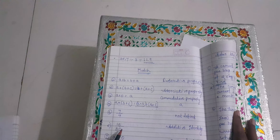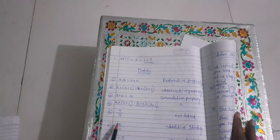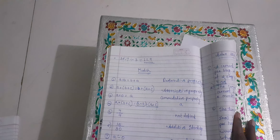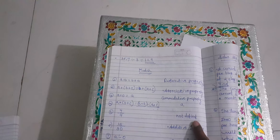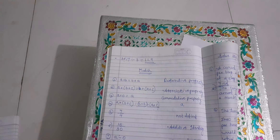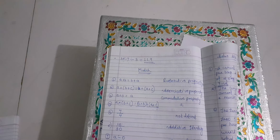Types of fractions are given here. When the numerator is greater than the denominator, which fraction is it? It's an improper fraction. When the numerator is less than the denominator, it's a proper fraction. A divided by 0 — the answer is undefined. A divided by 1 — the answer is A itself.